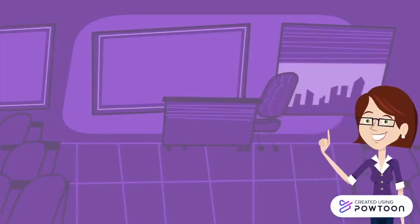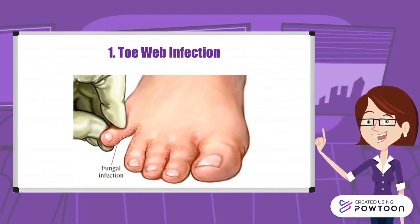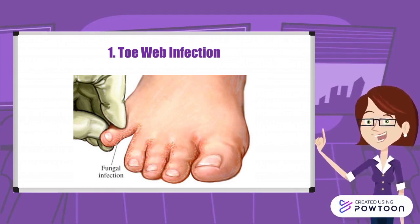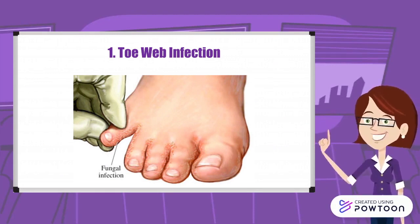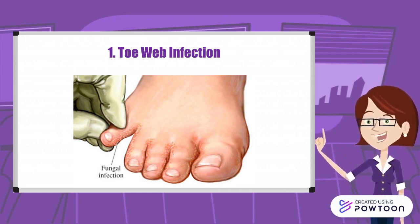There are four types of athlete's foot. The first one is toe web infection, also known as interdigital infection, which usually starts between the fourth and the fifth toes. Bacteria can infect the area of the toe web infection and make it worse.